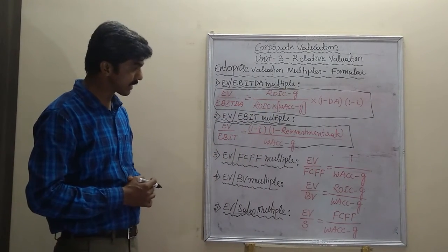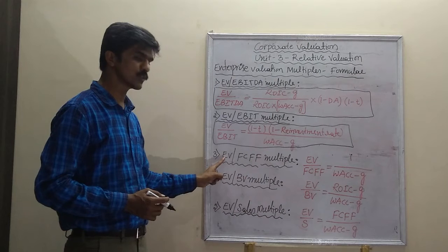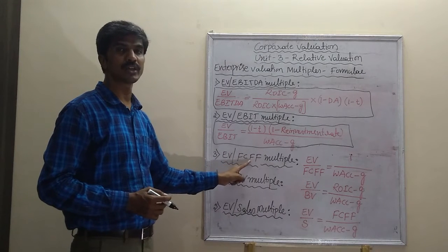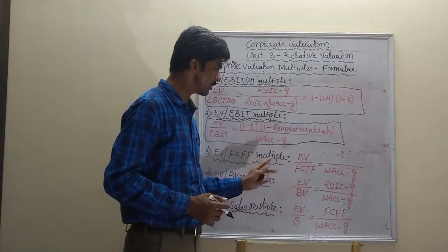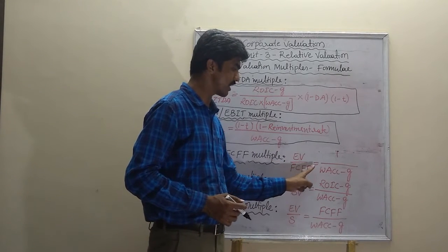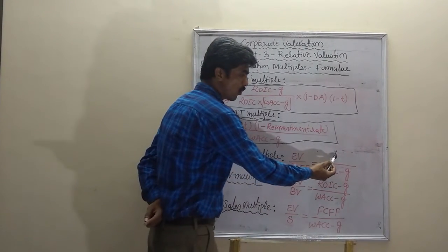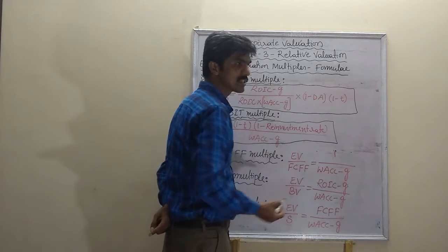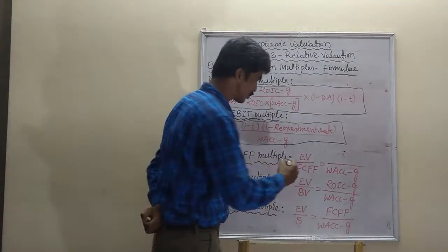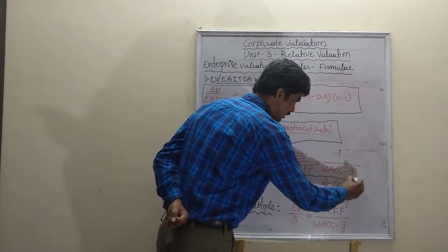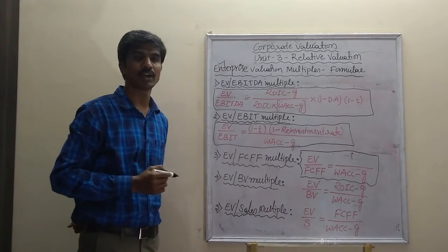Now move on to the next enterprise valuation multiple, that is EV to FCFF multiple, also known as enterprise value to free cash flow to the firm multiple. Here is the formula we use in calculating this multiple: EV to FCFF is equal to 1 divided by (WACC minus G). Wherein WACC stands for weighted average cost of capital, and G stands for growth rate in dividends. This is the formula we use to calculate EV to FCFF multiple.